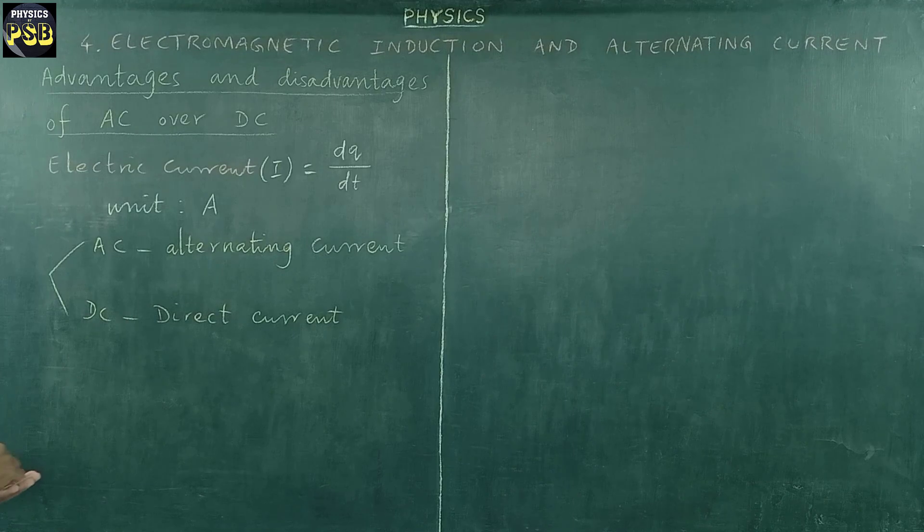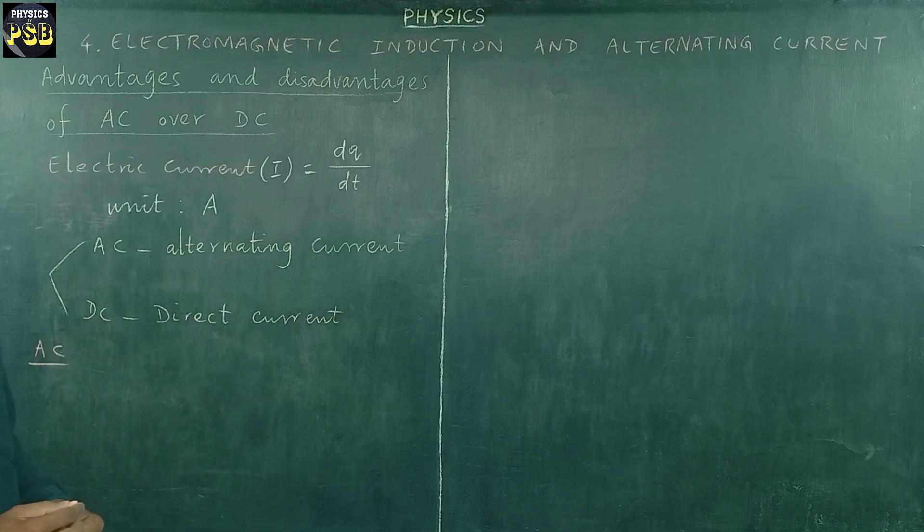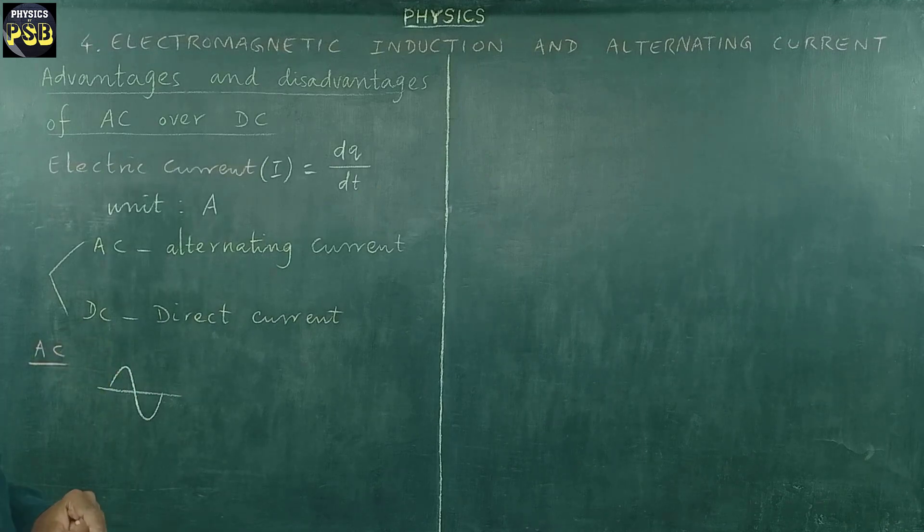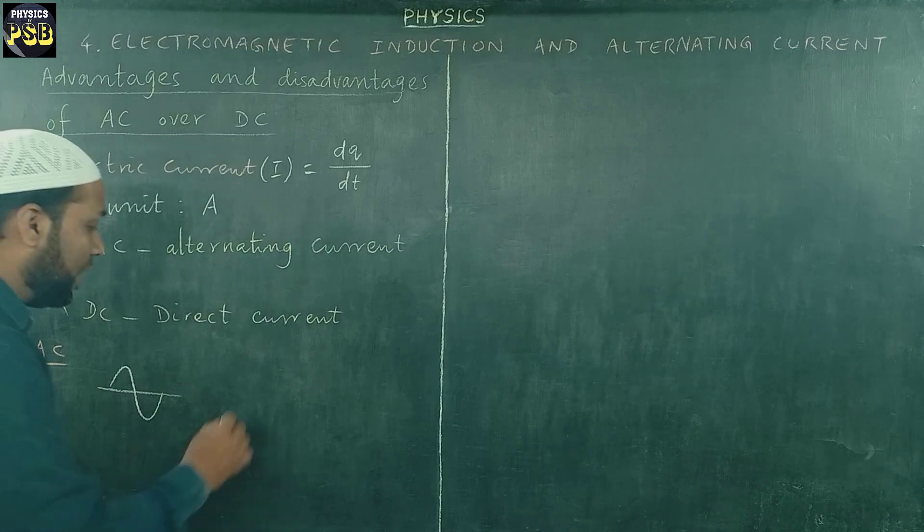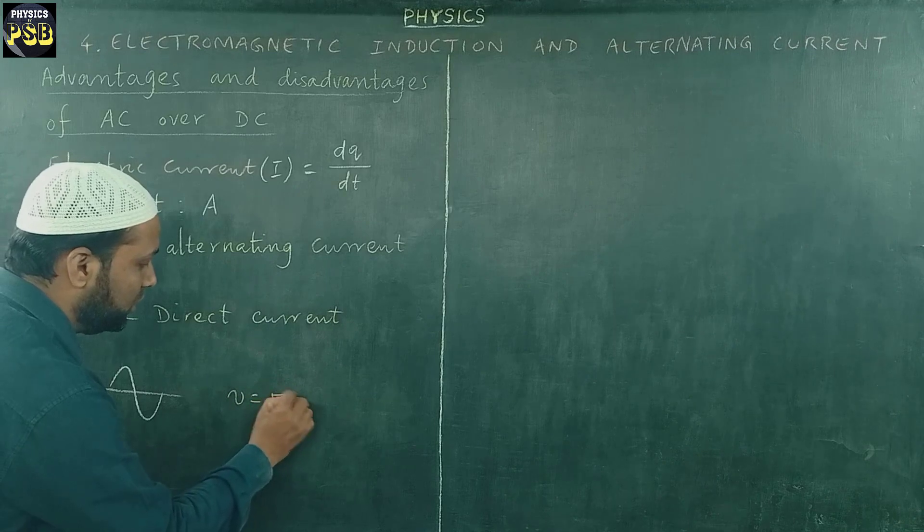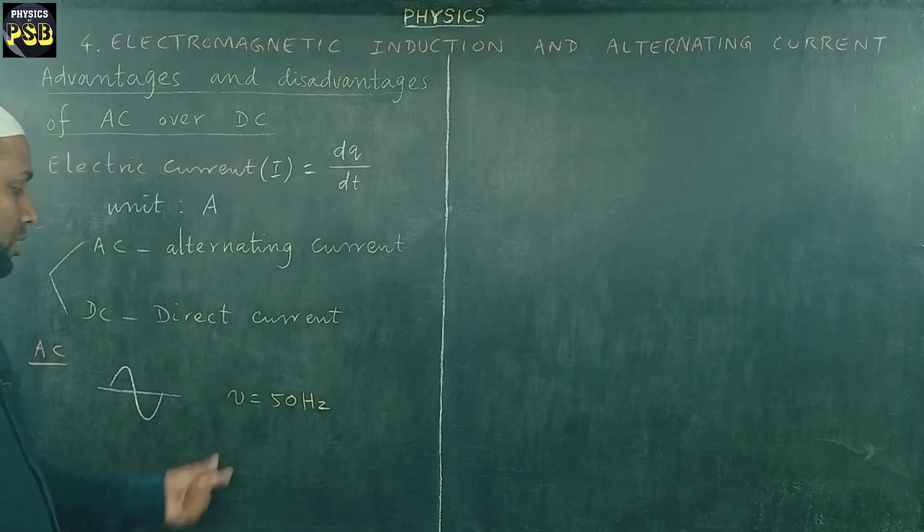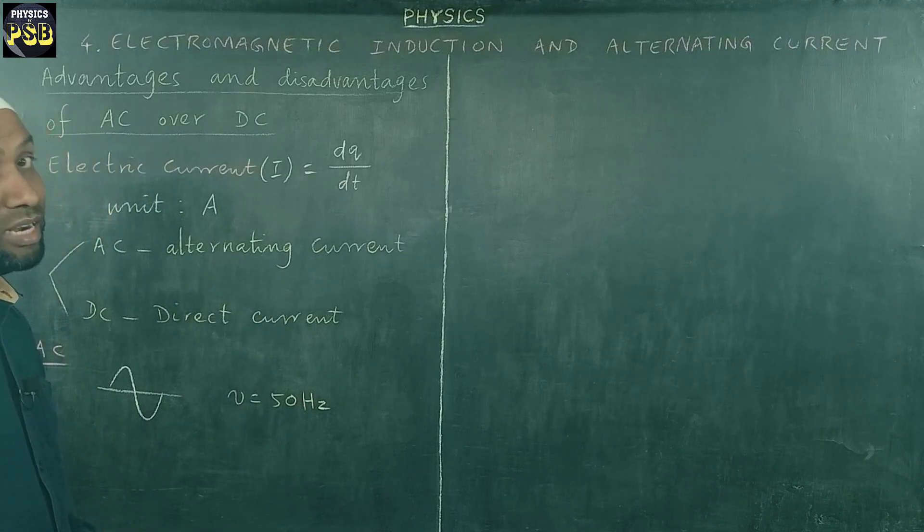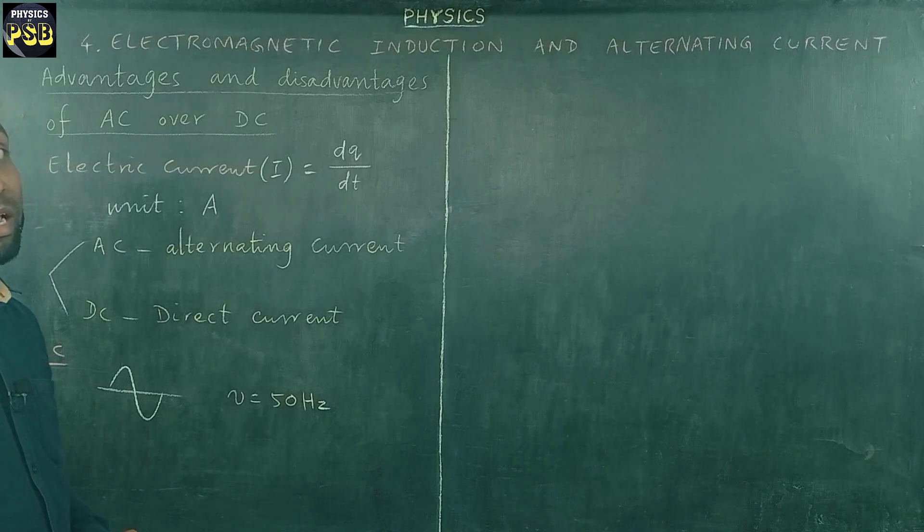In case of alternating current, the direction varies continuously with time. It is purely represented by sinusoidal wave that shows the variation of direction and the polarity with time. It is found to have frequency which is 50 Hz in India. This shows that the direction of alternating current changes every time in one second.